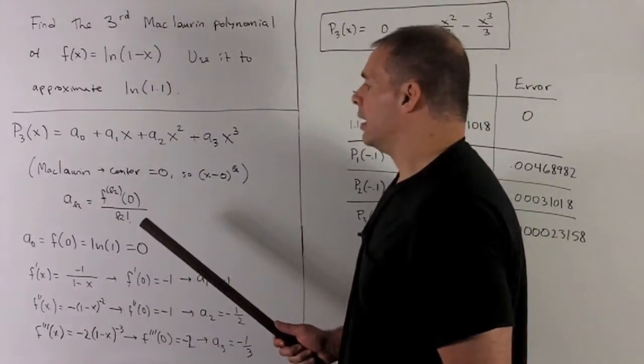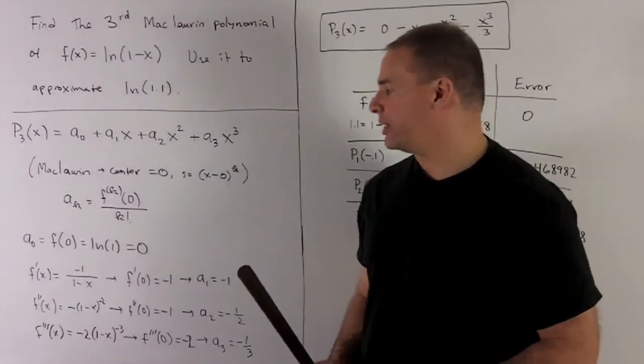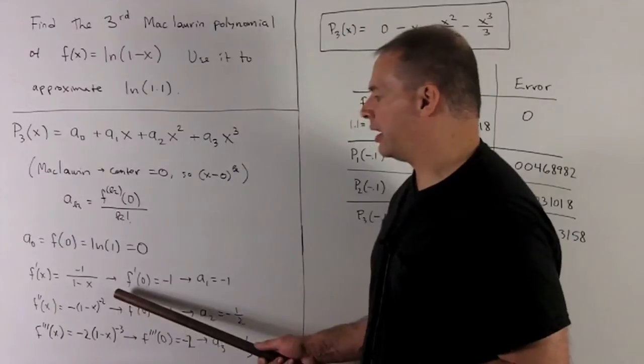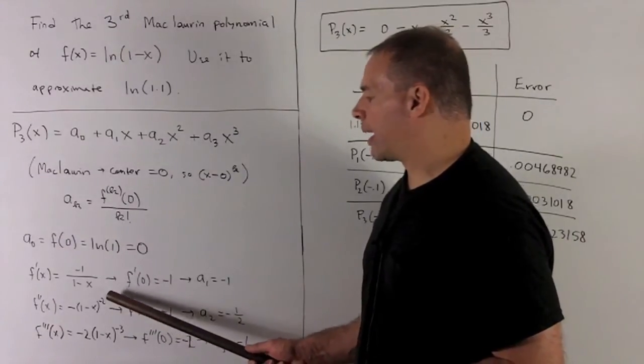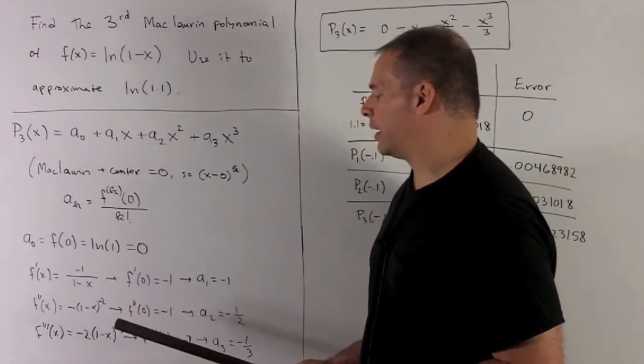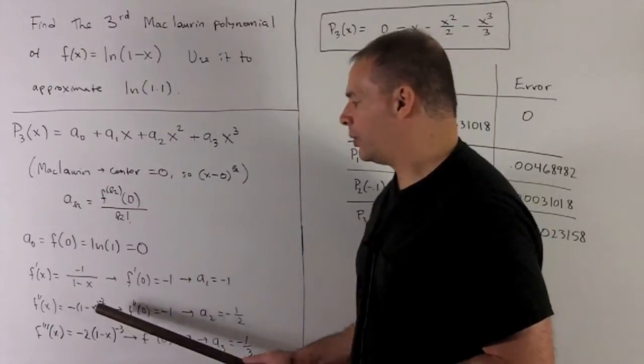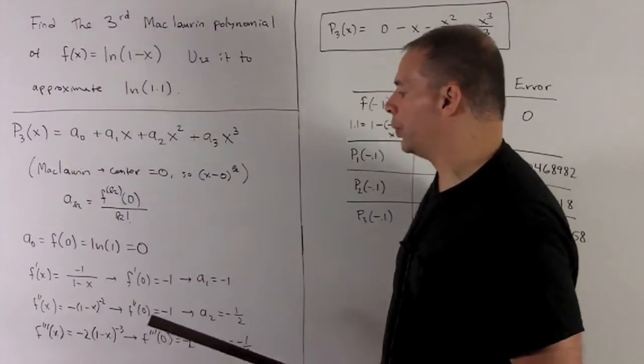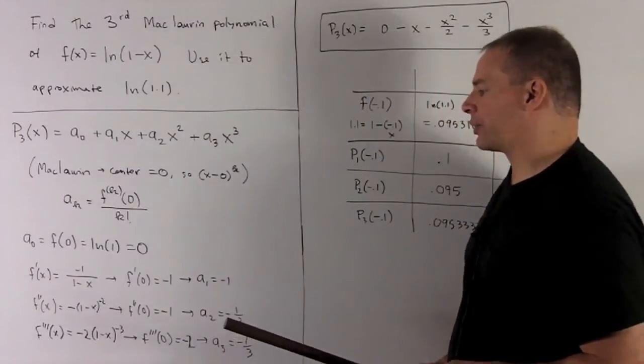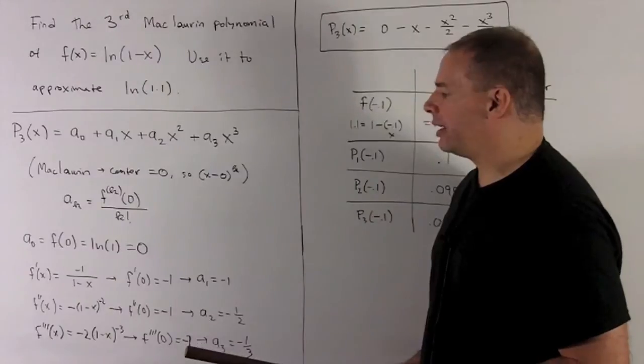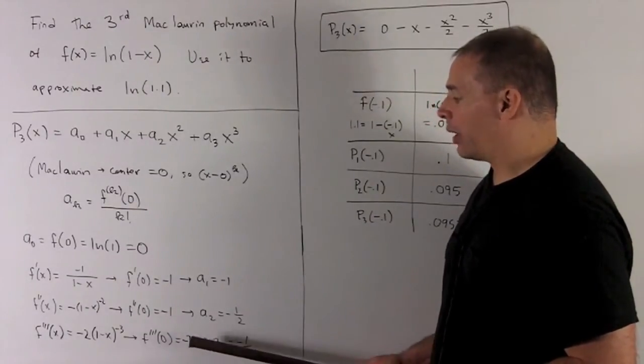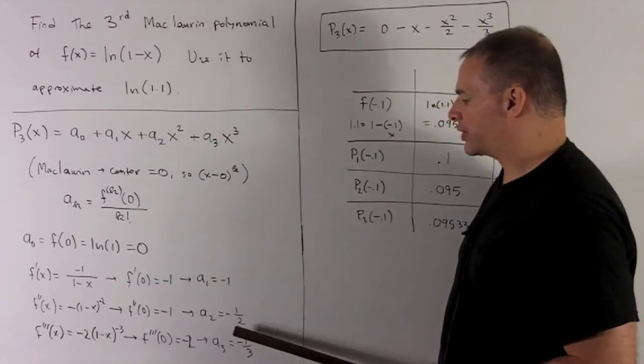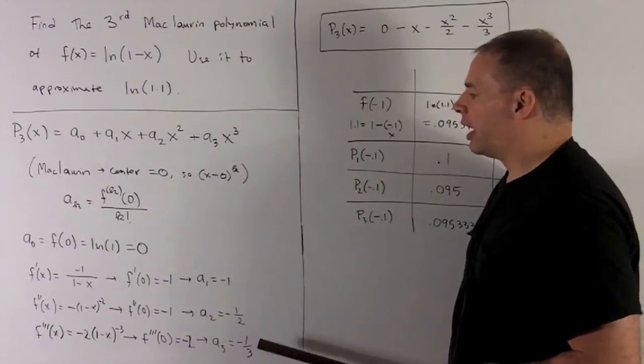For a_3, I'm going to take the third derivative evaluated at 0, divide by 3 factorial, which is 6. Same idea here. To get the third derivative, we drop the minus 2, subtract 1 off the exponent to get a minus 3, and then we take a derivative of the inside, which throws a minus sign back out there. So we're looking at minus 2, (1-x) to the minus 3rd. We put a 0 in, and that's just going to leave us with minus 2. Now, we have to divide that by 6 to get a_3, so that's going to give me minus 1 third, and those are all the a's.